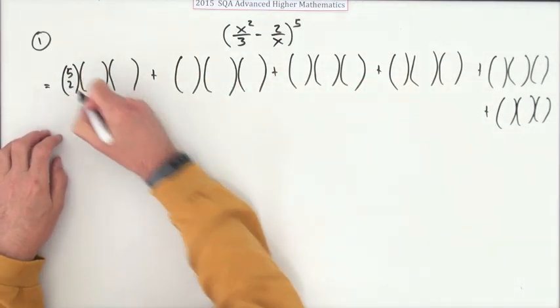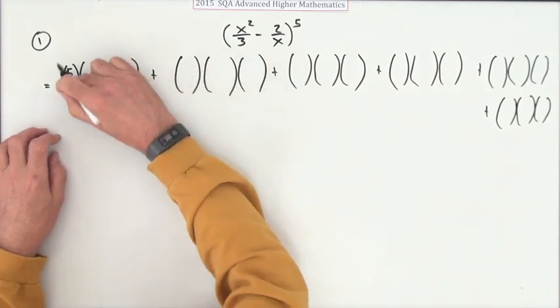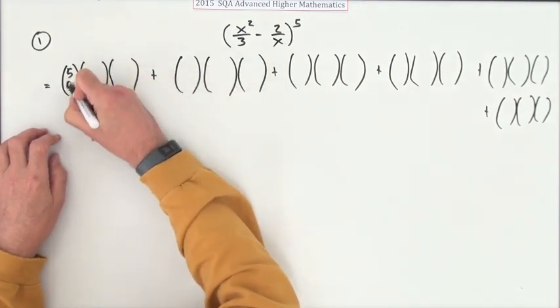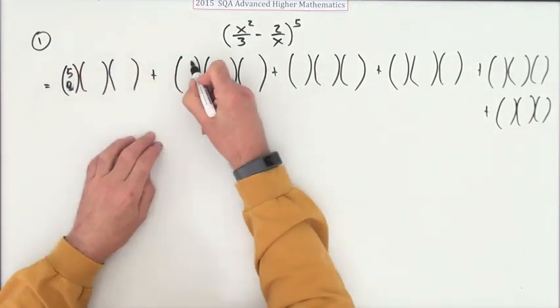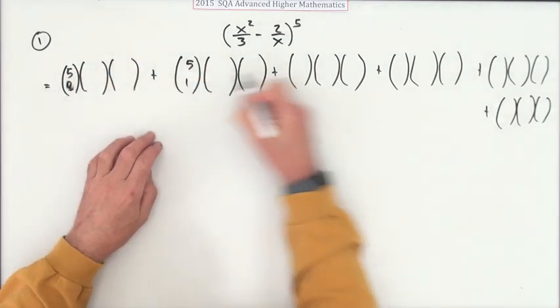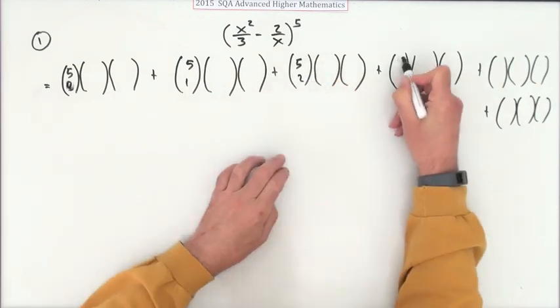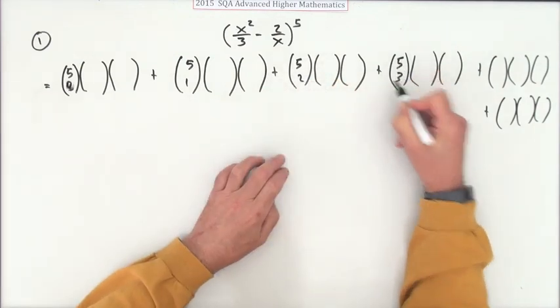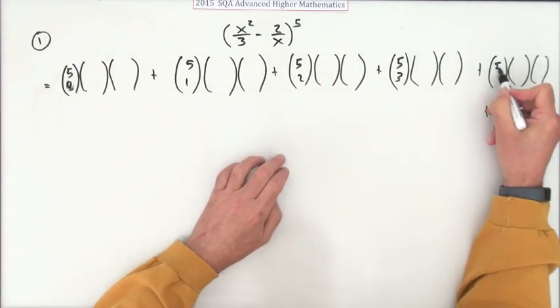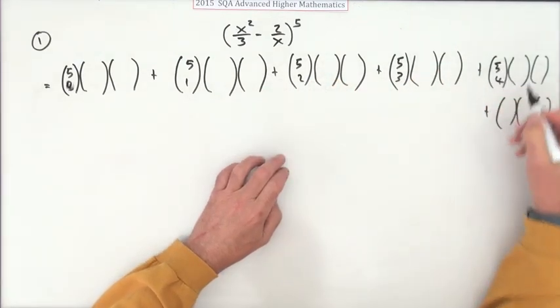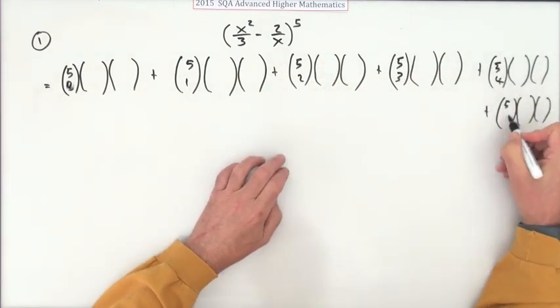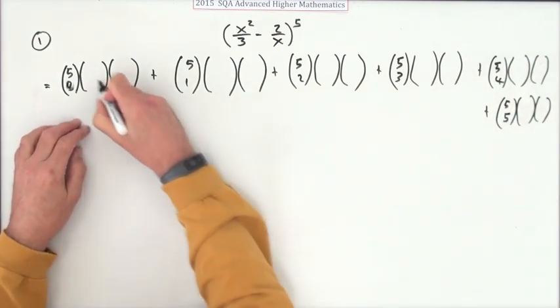You do all the binomial coefficients first. Five-zero, five-one, five-two, five-three, five-four, five-five. Can't read and write anymore.